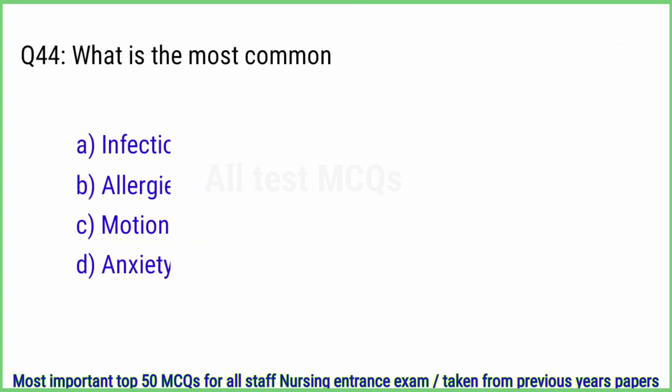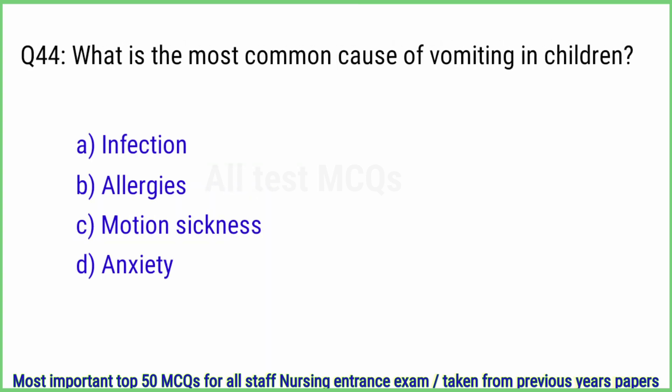Q44. What is the most common cause of poisoning in children? The right answer is option A, infection.